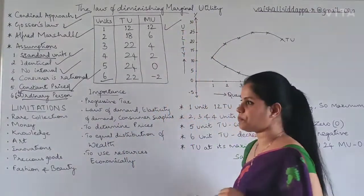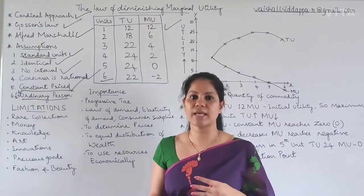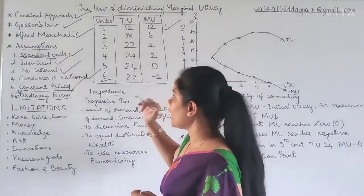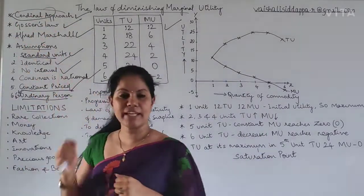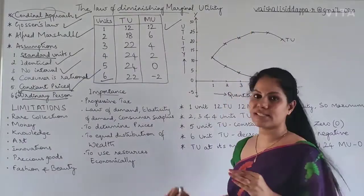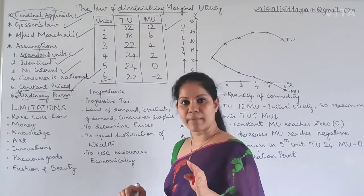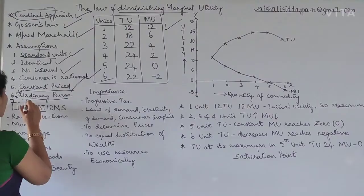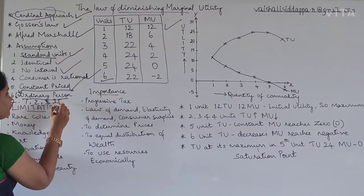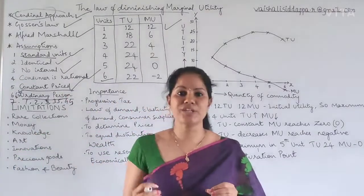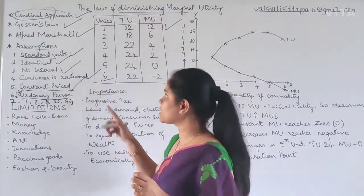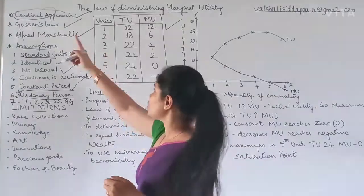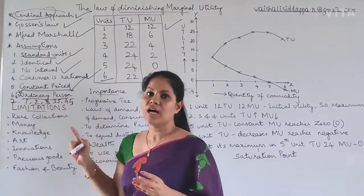Now let me come to the table. For this table explanation, you should see my previous class where I started the second chapter — I explained ordinal approach and cardinal approach. This law of diminishing marginal utility is one of the theories of cardinal approach. Cardinal approach says you can measure utility in terms of numbers: 1, 2, 3, 35, 45 — this way you can measure utility in numbers. That methodology is called cardinal approach. We also have the ordinal approach to measure utility, which I will cover in the next classes.